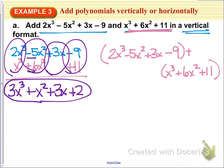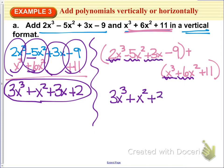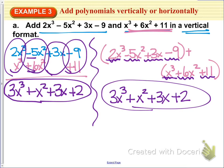Then if I wanted to do it in the other format, horizontally, I would just mark down which like terms I'm adding together to help. So 2 plus 1x to the third will give us 3x to the third. Negative 5x squared plus 6x squared would be positive 1x squared. 3x doesn't get to be combined with anything, because there are no like terms for it. And then negative 9 plus 11 is plus 2. And so either way you do this, you will end up with the same answer.